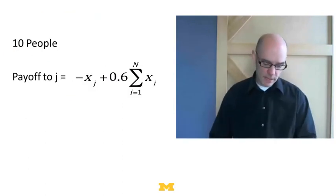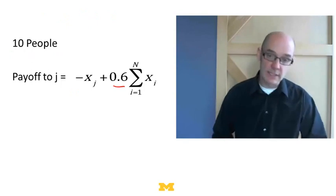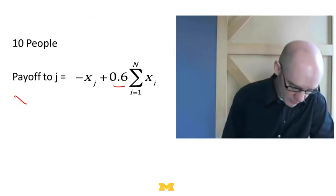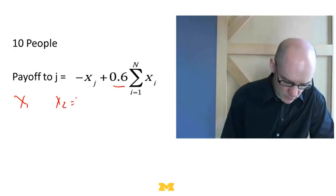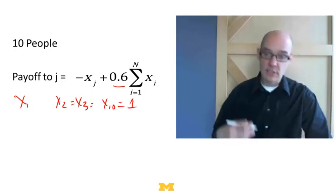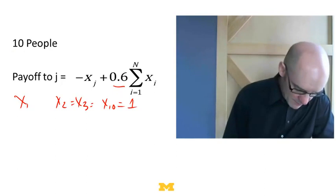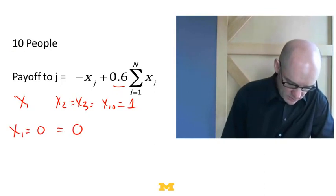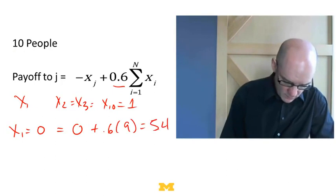Let's look at an example. Let's suppose there's 10 people, and we're going to assume that beta equals 0.6. Now let's suppose everybody else is cooperating. Let's suppose I'm x1, and that x2 equals x3 equals x10 equals 1.